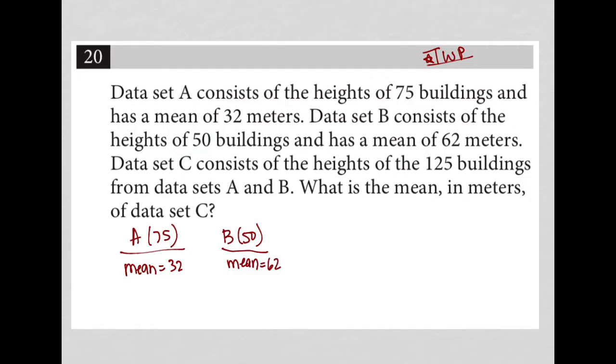The next sentence says data set C consists of the heights of the 125 buildings from data sets A and B. So C is 125 and basically it's going to be A plus B over the 125 to equal the mean. That's how we would find the mean for data set C. The question asks, what is the mean in meters of data set C?